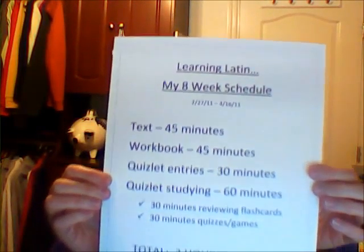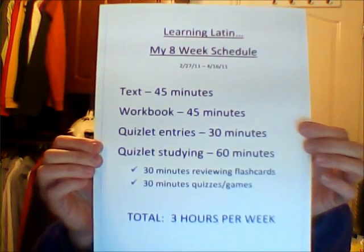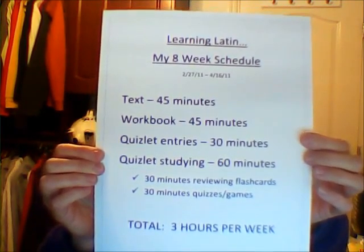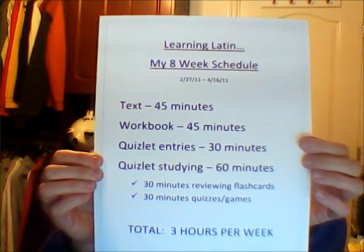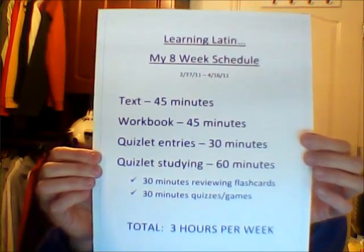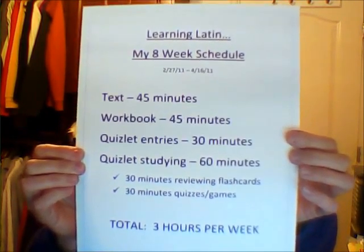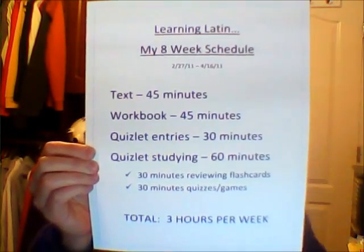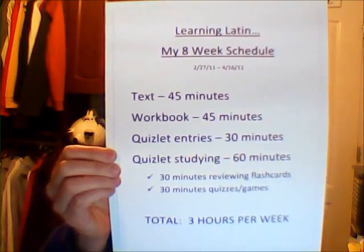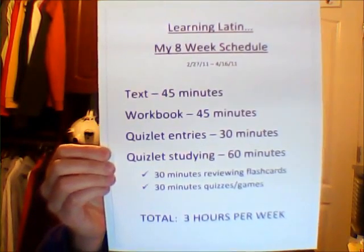I just got started with my project. Here's my schedule. I broke it down into eight weeks, and the project suggests 20 hours total. Eight weeks at three hours a week would be 24 hours. I'm going to work each week: 45 minutes on the textbook, 45 minutes on the workbook, 30 minutes on Quizlet entries — adding things I can't already find there — and then 60 minutes studying the flashcards, games, and quizzes in Quizlet, totaling three hours per week.